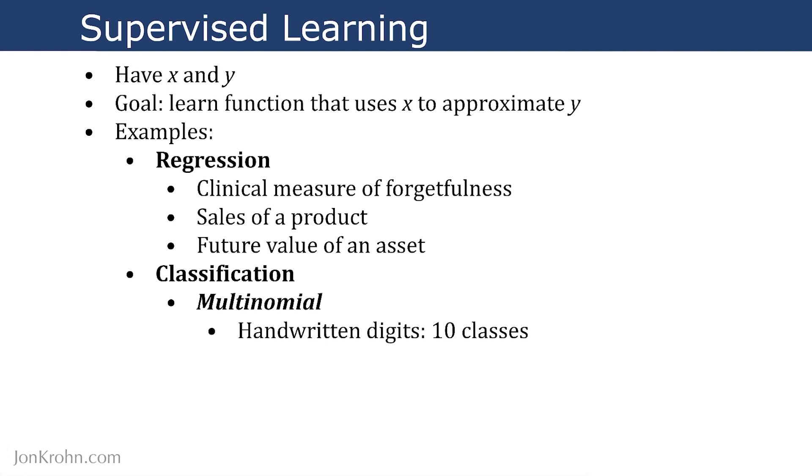So for example, a common example in introductory deep learning textbooks and tutorials is to use this data set of handwritten digits. And there are 10 possible digits, 0, 1, 2, 3, 4, 5, 6, 7, 8, or 9, that you could handwrite.